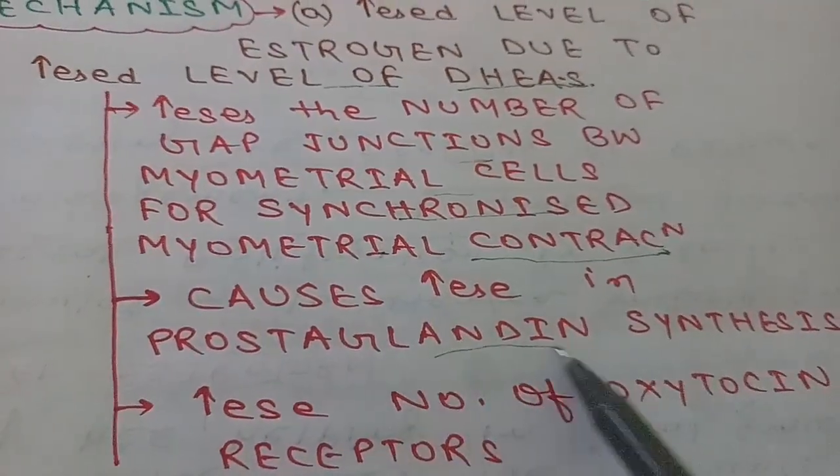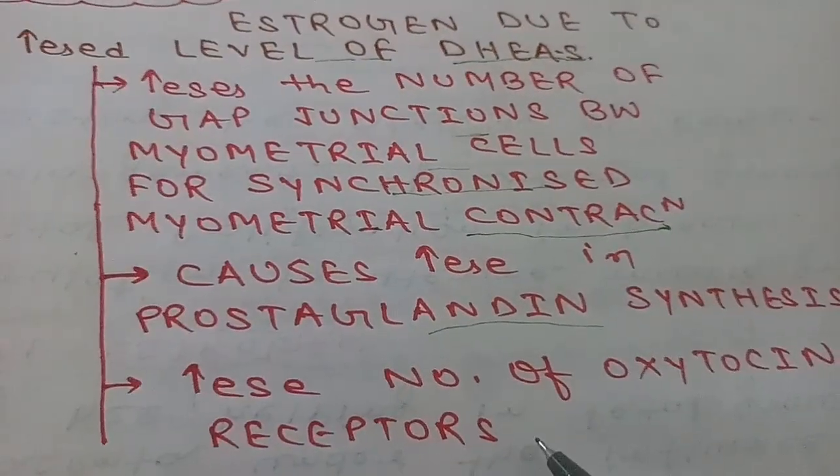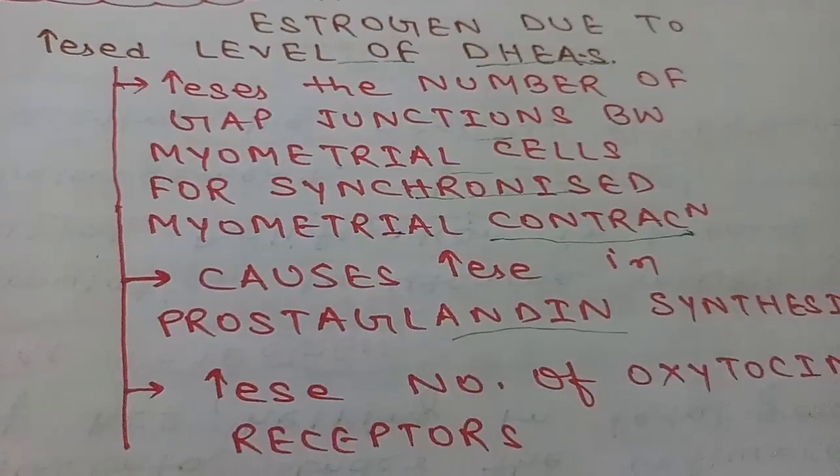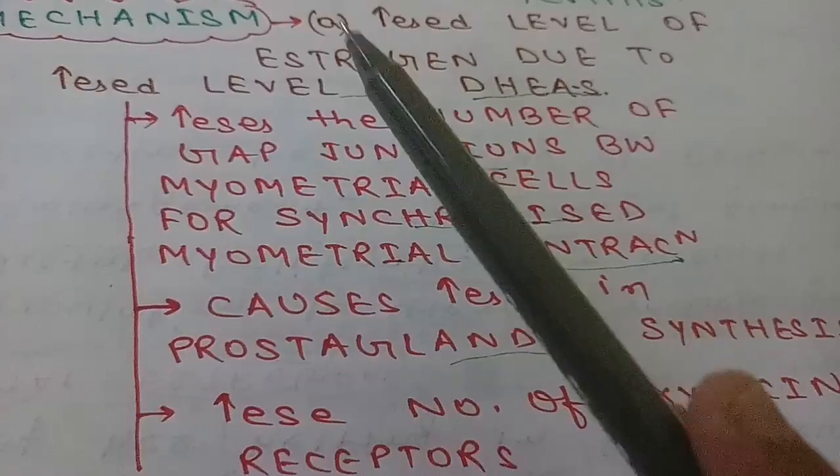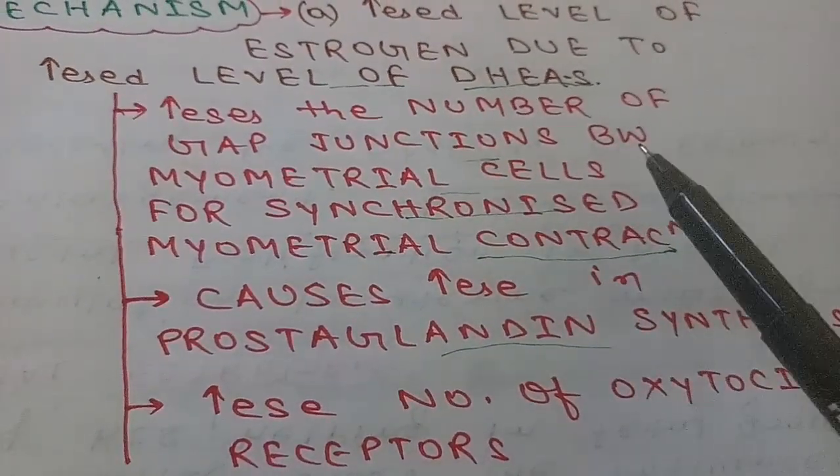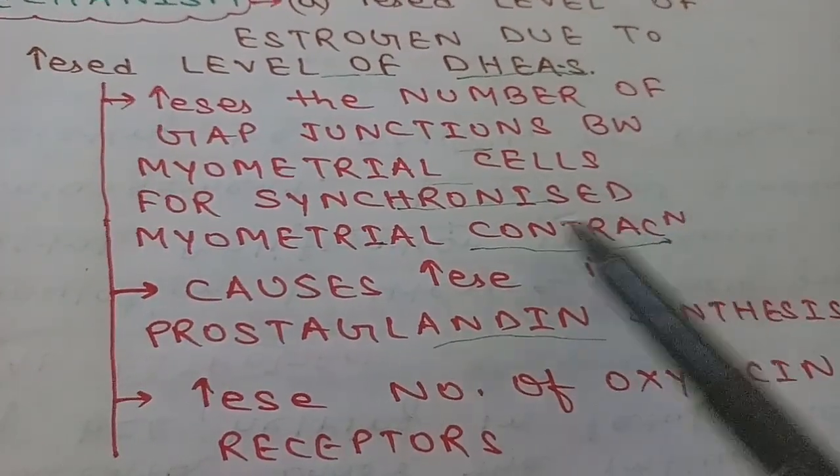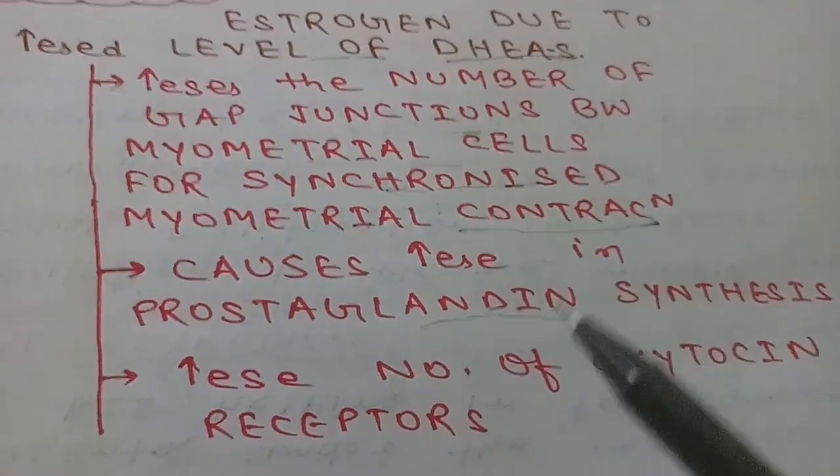The second one is the increase in prostaglandin synthesis, and the third one is increased number of oxytocin receptors so that the same amount of oxytocin can work more efficiently. So the three effects of increased estrogen are: increased gap junctions promoting synchronized myometrial contraction, increased prostaglandin levels, and increased number of oxytocin receptors.